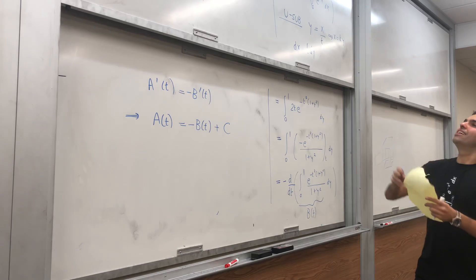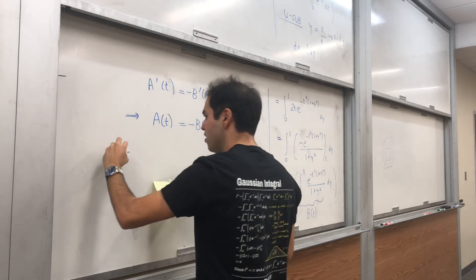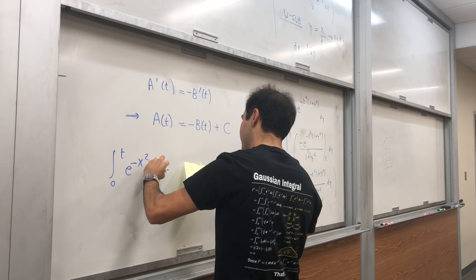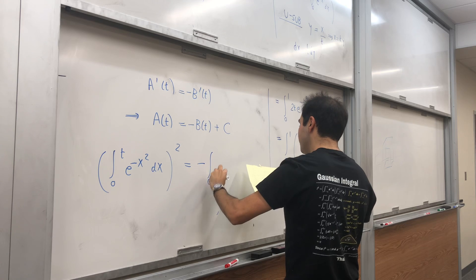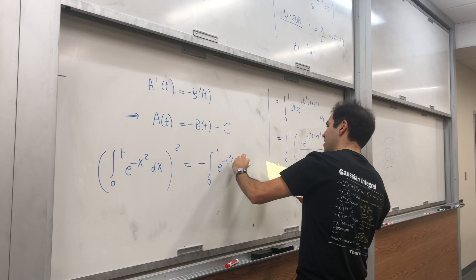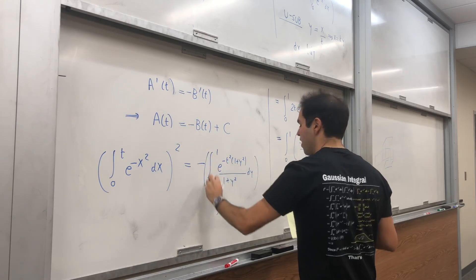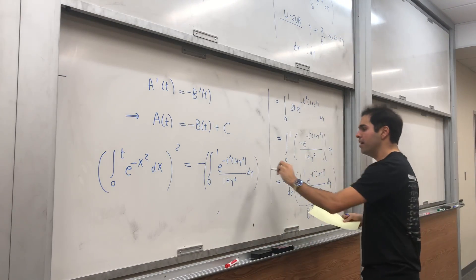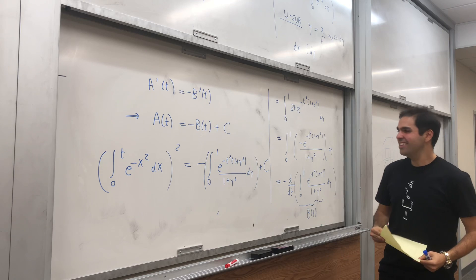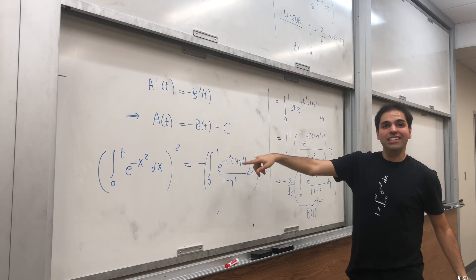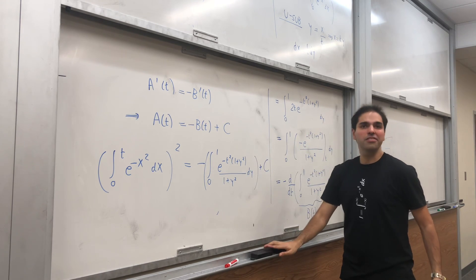What does that mean? Remember that a is sort of the integral that we want. So, we get integral from 0 to t of e of minus x squared dx squared equals to minus integral from 0 to 1 of e of minus t squared, 1 plus y squared over 1 plus y squared dy. Okay, that's just b, right, plus a constant. And here's a cool thing, now we will use two different ways. In other words, we will plug in t equals to two different values. One will give us the value of our constant, the other one will give us our answer, actually.